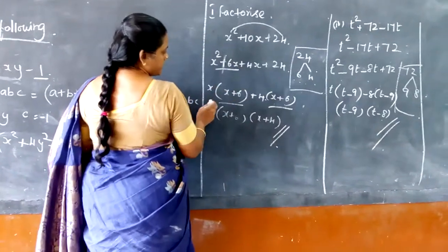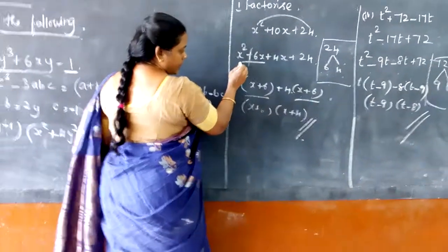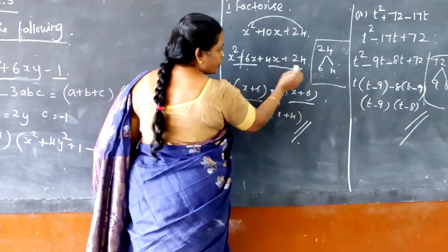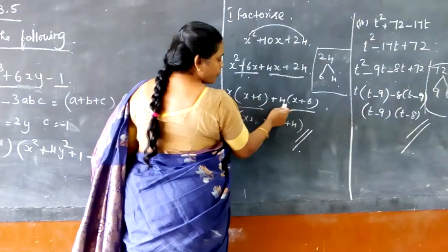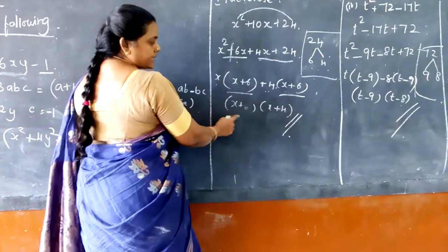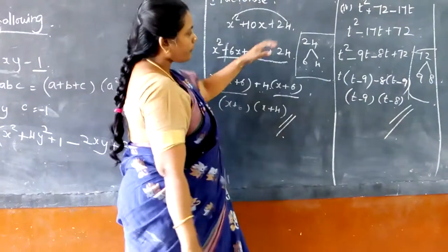Now I am going to join these terms. x times (x + 6), 6 times x is 6x, and here we take out 4, so 4x plus 6x are 10x and 4 times 6 is 24. So the values are (x + 6) and (x + 4).